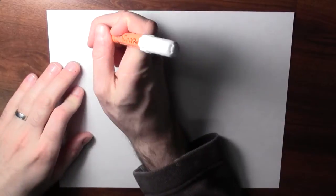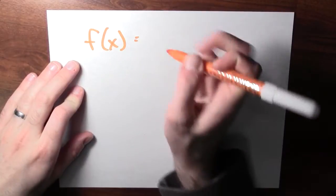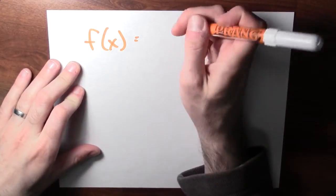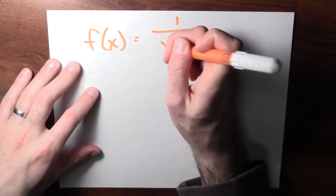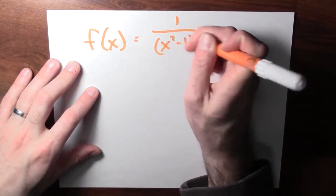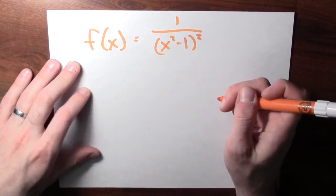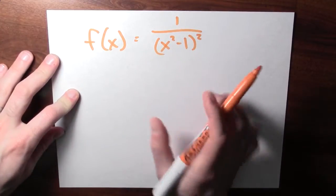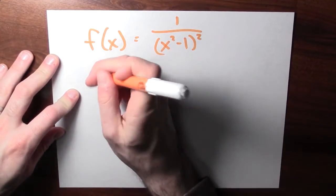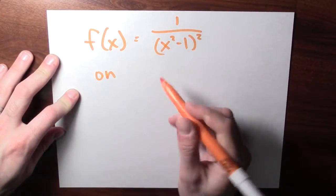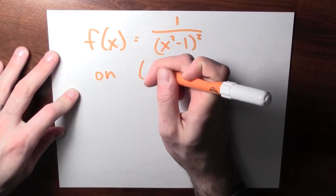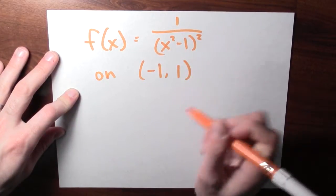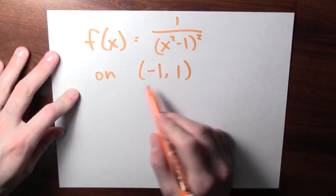Let's work an example. Let's look at the function given by f of x equals 1 over x squared minus 1, this quantity squared. But let's only consider this function on a restricted domain — the maximum and minimum values on the open interval between minus 1 and 1.